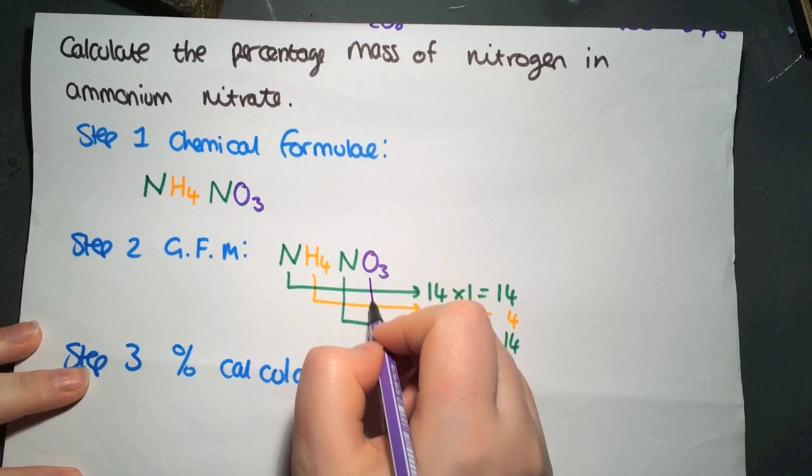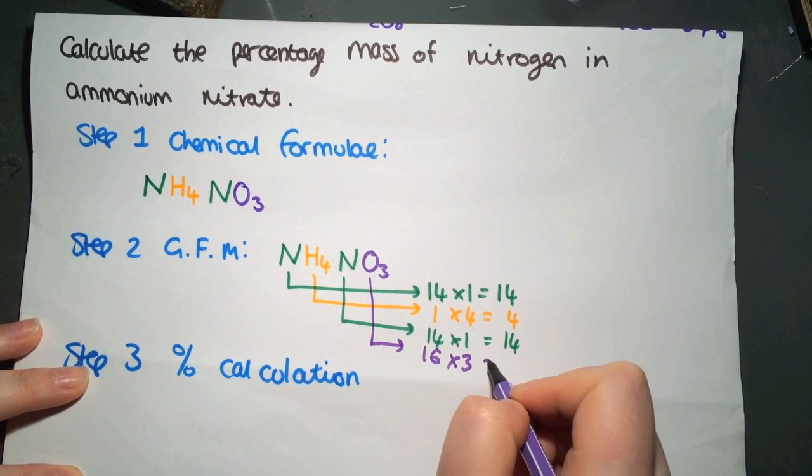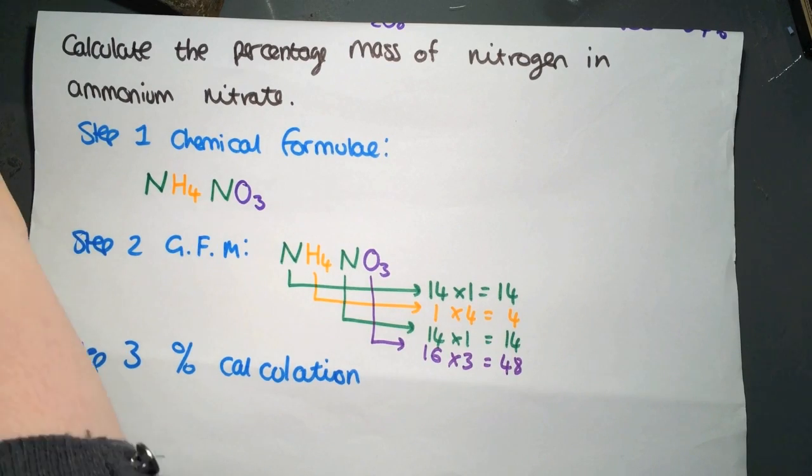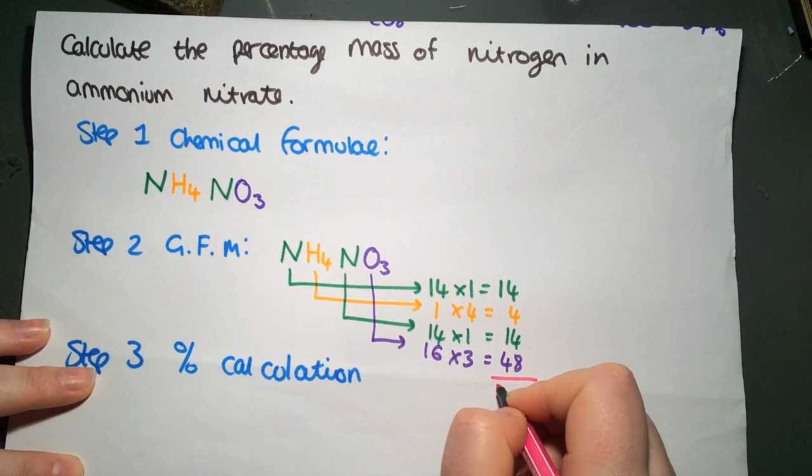And finally, oxygen, 16 multiplied by 3 to give us 48. That gives us a total gram formula mass of 80.